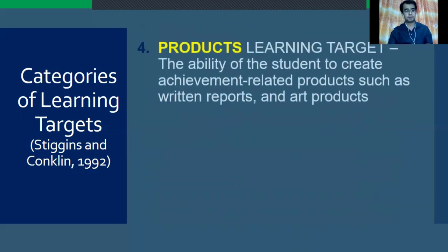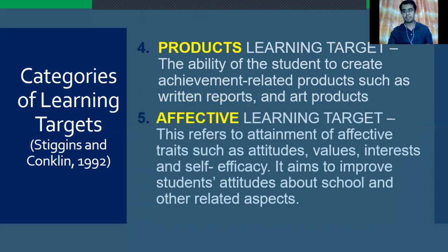Number 4: Product Learning Targets — the ability of students to create achievement-related products such as written reports and art products. Number 5: Affective Learning Target — this refers to attainment of affective traits such as attitudes, values, interest, and self-efficacy. It aims to improve students' attitude about school and other related aspects.